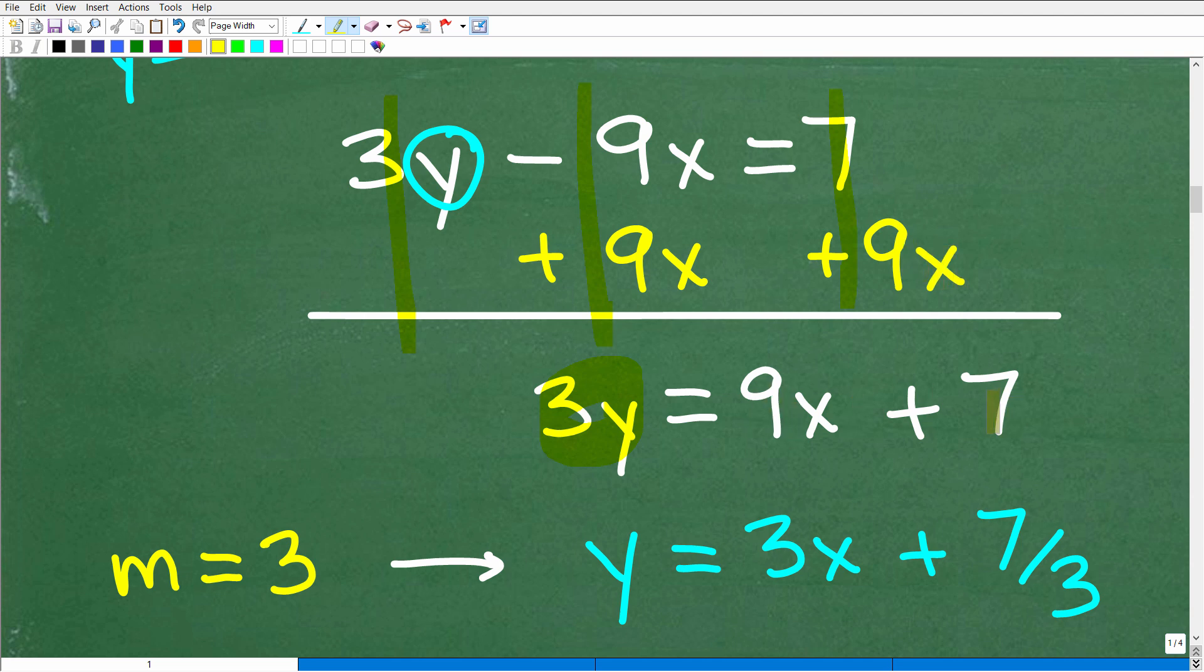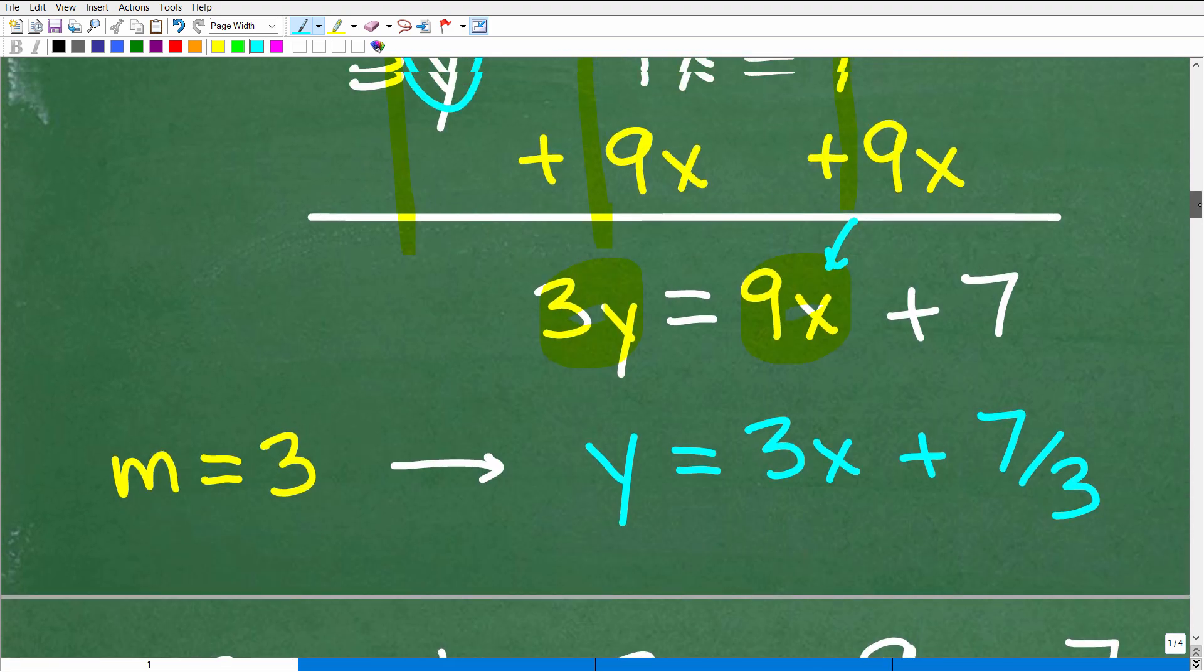So that goes away. I don't need to write that zero there. And this is going to be 7 plus 9x. But we'll write this as 9x plus 7 because, remember, it's going to be y equals mx plus b. So we want to have that variable term first. So we're almost there. We have 3y is equal to 9x plus 7. But we want y is equal to. Not 3y is equal to.